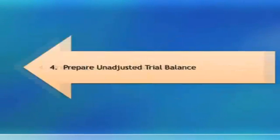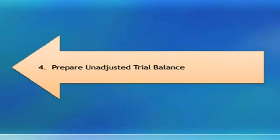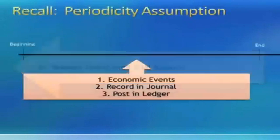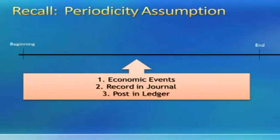The fourth step in the accounting cycle is to prepare an unadjusted trial balance. Before we talk about the unadjusted trial balance, let's put things into context. Recall that we have a periodicity assumption in accounting — that means a business cycle is divided into artificial time periods, and we prepare financial statements at the end of each of those time periods, so there is a beginning and an end.